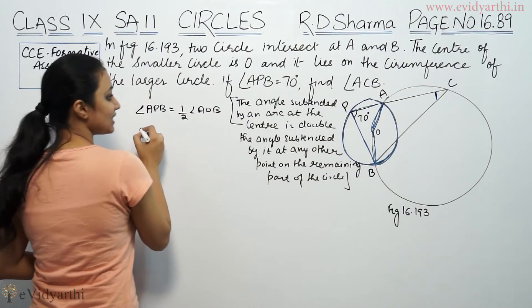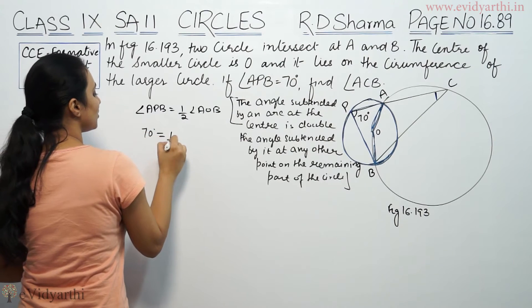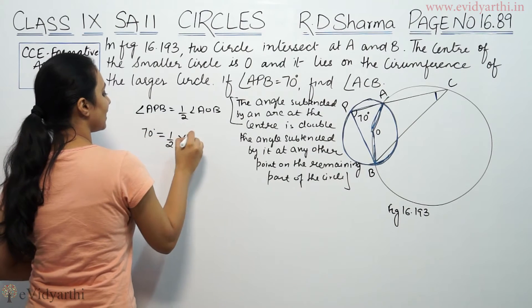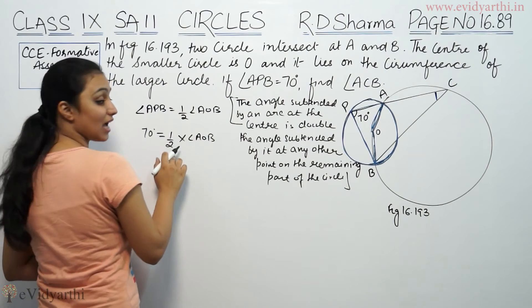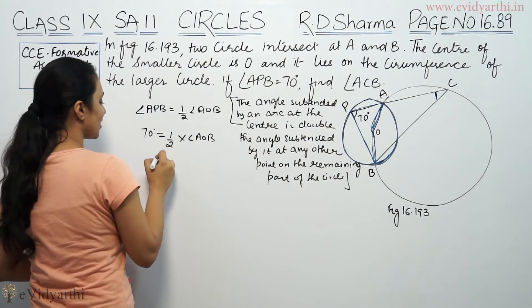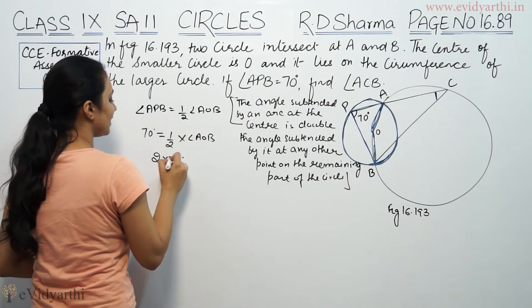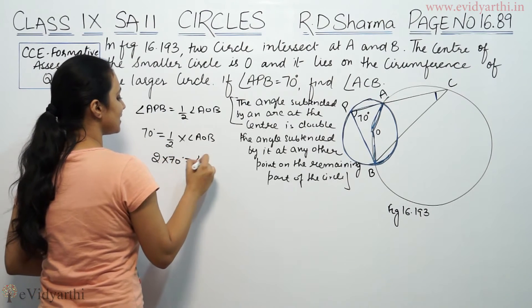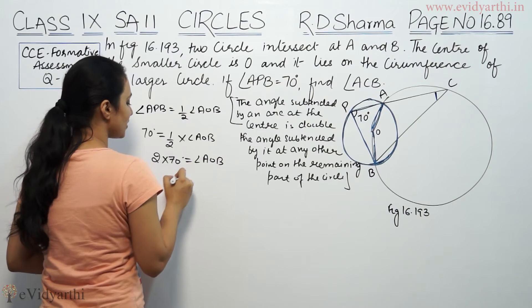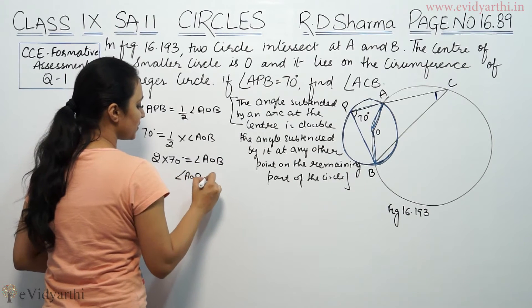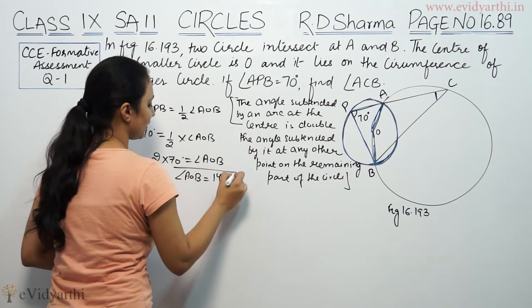So, angle APB equals 70 degrees, which is equal to half of angle AOB. Therefore, angle AOB equals 2 into 70 degrees, which gives angle AOB as 140 degrees.